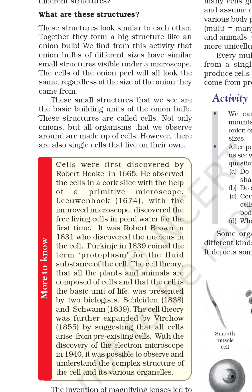The cells were first discovered by Robert Hooke in 1665. He observed the cell in a cork slice with the help of a primitive microscope. Leeuwenhoek in 1674, with an improved microscope, discovered the free-living cell in pond water for the first time. It was Robert Brown in 1831 who discovered the nucleus in the cell.